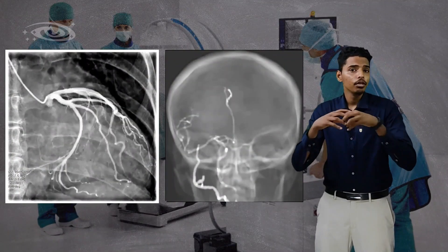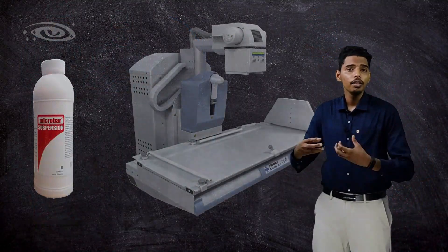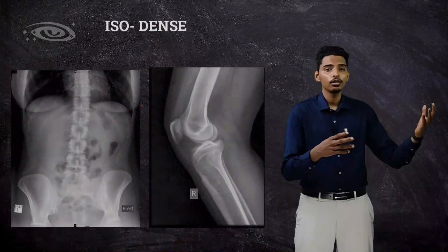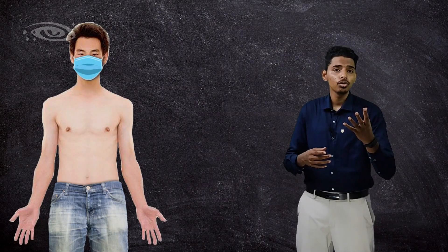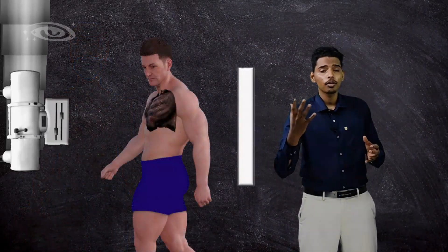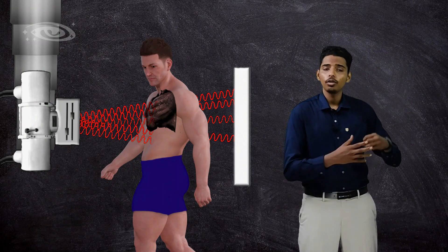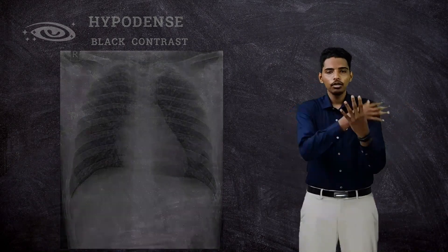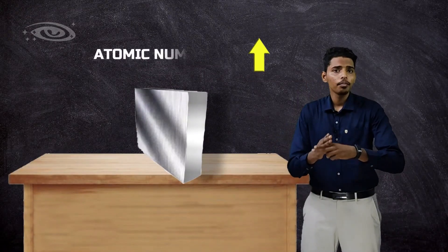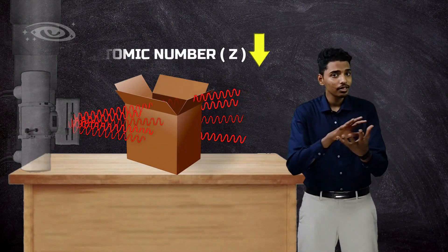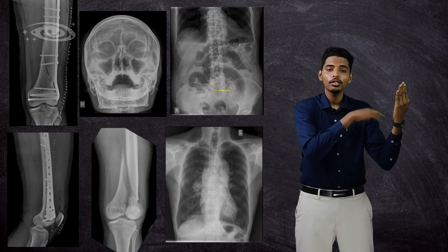In fluoroscopy procedures, we inject contrast to visualize blood vessels and do barium studies to see intestinal structures for pathologies. In chest X-rays, lung fields appear very dark or black because the lungs are filled with air, which absorbs very little X-rays — around 1% — so approximately 90% of X-rays reach the detector, making air appear hypodense or dark. These organs have different absorption rates, which we call differential absorption. When atomic number is high, photoelectric absorption is greater; when atomic number is low, photoelectric absorption is less. This differential absorption produces different contrast densities on the radiograph.